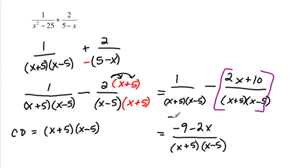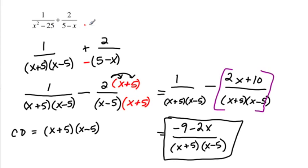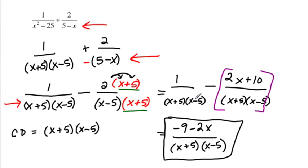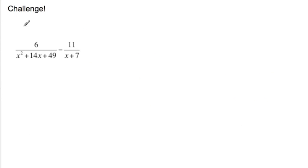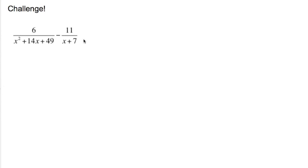A lot of different steps happen in these types of problems. Remember: first, check for common denominators. Second, see if you have positive or negative values that can be rearranged. Third, find the common denominator and multiply the numerator and denominator by the missing element to create a common denominator. There's a challenge problem — go ahead and do it on your own, and we can talk about it in class. Alright, thanks.